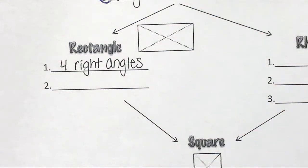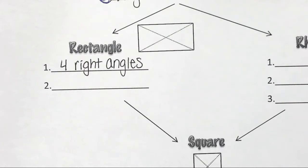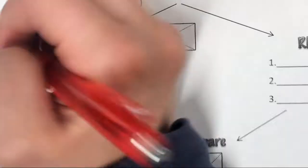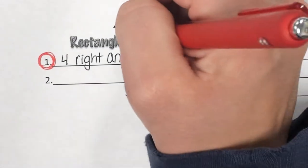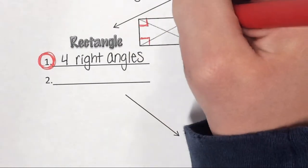You have four right angles. Just like yesterday, you have your markers out on your table. Go ahead and pick a marker and circle number one in that color. We know that anything on our rectangle that's in red represents this property. In that same color, if I wanted to show that I had four right angles in my picture, what would you draw? Your little squares. Here are your four right angles.